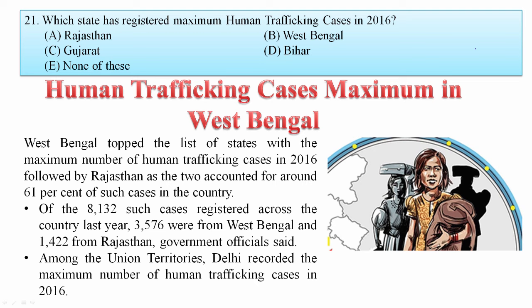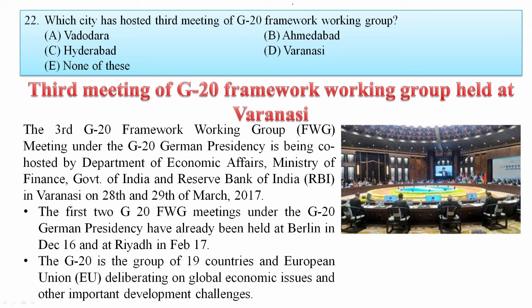Which state registered the maximum human trafficking cases in 2016? West Bengal topped the list of states with the maximum number of human trafficking cases in 2016, followed by Rajasthan. Together they account for about 61% of such cases in the country. Your answer is West Bengal.